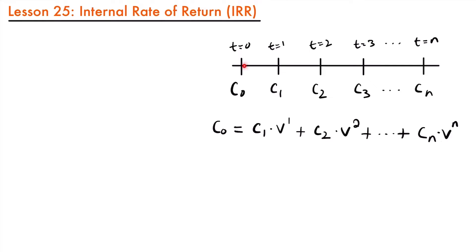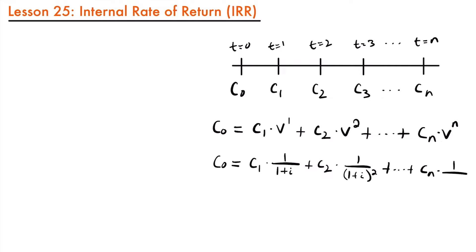We can rewrite each of these present value factors so that C sub 0 is equal to C sub 1 times 1 divided by (1 plus i), plus C sub 2 times 1 divided by (1 plus i) squared, and continuing to add up until C sub N times 1 divided by (1 plus i) to the power of N. This interest rate i in these present value factors is the internal rate of return for this transaction. If we know the values of C sub 0, C sub 1, C sub 2, and so on, we can solve for i and find the internal rate of return.